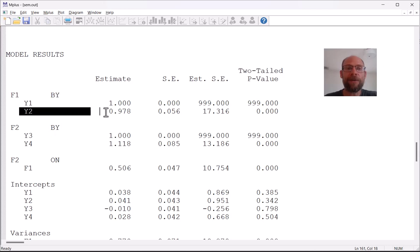So the first factor loading for each factor is always fixed to 1.0 by default in Mplus for model identification. The second factor loading is estimated and all other subsequent factor loadings would be estimated if you had more than two indicators. You can see that this one here is 0.978 for the second indicator and it's highly significant. So obviously this variable is strongly related to the factor f1.